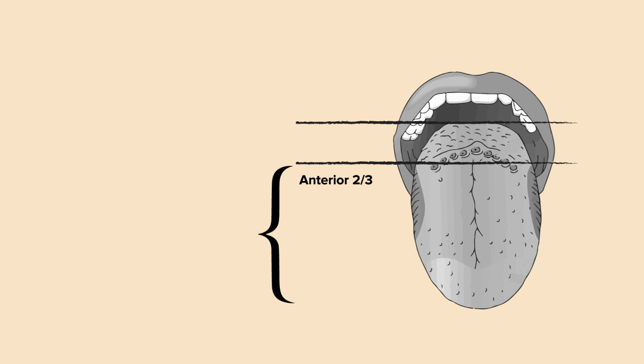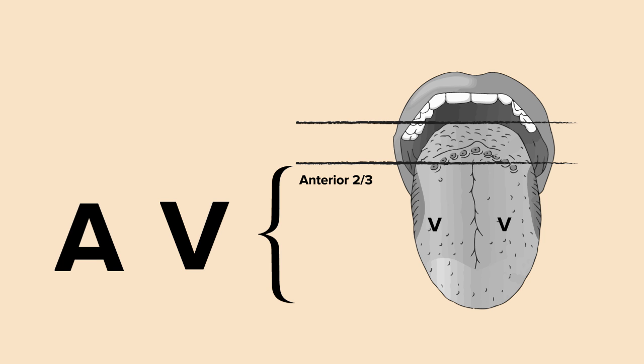In the anterior two-thirds of the tongue, think A for anterior. Flipping the letter A in another direction makes it look like the letter V. Taking the numbers 2 and 3 from two-thirds shows us that taste to the anterior two-thirds of the tongue is relayed by cranial nerve 7, the facial nerve.